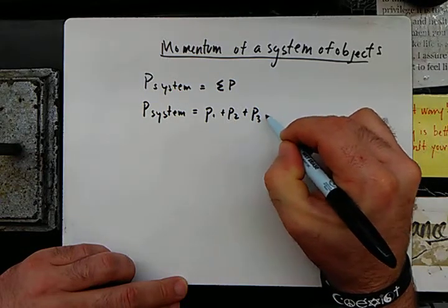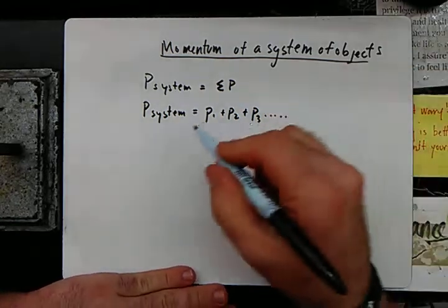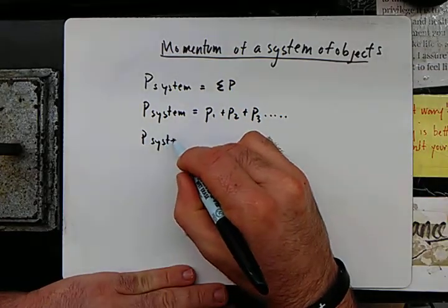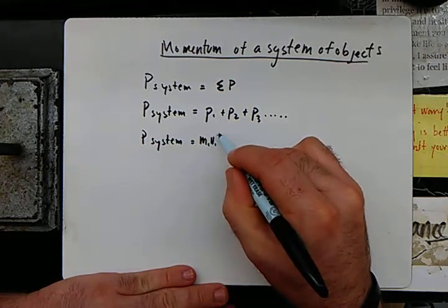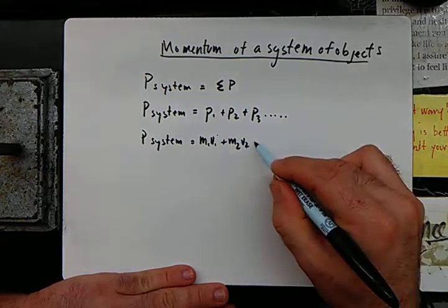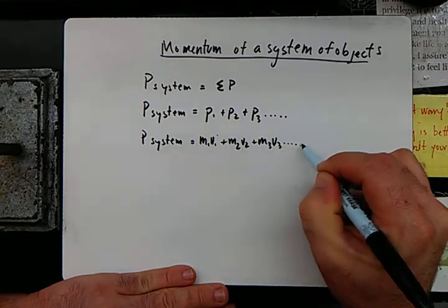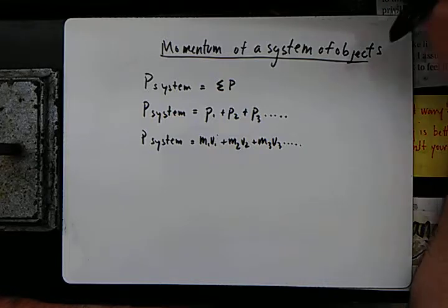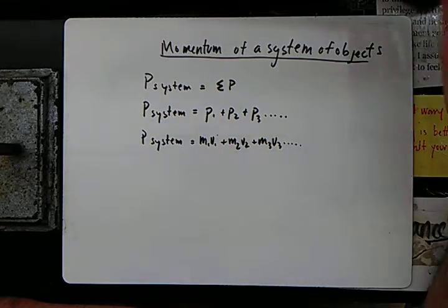plus momentum three, dot dot dot. We can also go a little bit further and say that it's m1v1 plus m2v2 plus m3v3, because we learned earlier that momentum is mass times the velocity in that direction.